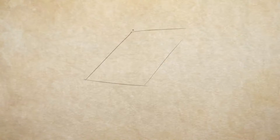So the first thing I think that is important to understand is planes. And I don't mean the ones that fly in the sky. What I mean is a flat, two-dimensional surface. So if you could imagine just like a sheet of paper, that is a plane. It's flat, and it's two-dimensional.